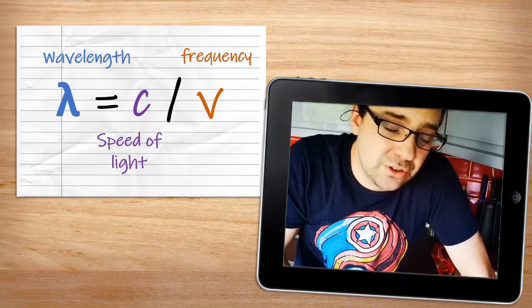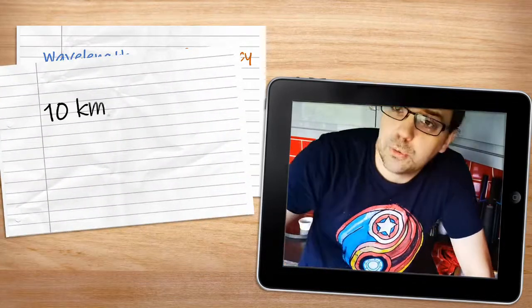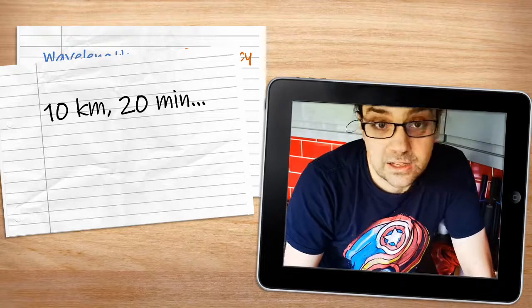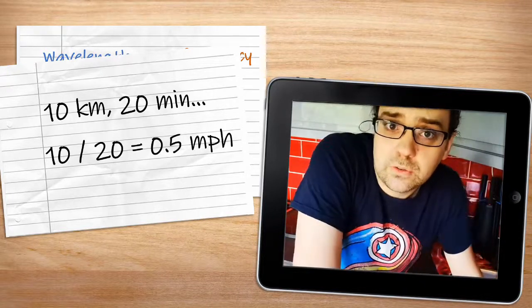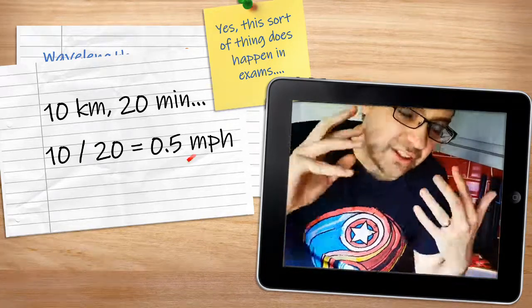If you memorize equations, you'll invariably do something really stupid like, I travelled 10 kilometers in 20 minutes. 10 divided by 20 is 0.5, therefore I travelled at 0.5 miles per hour. Clearly, that's nonsense.